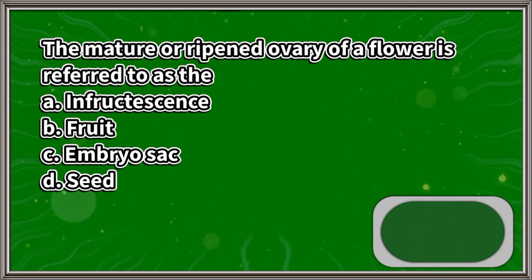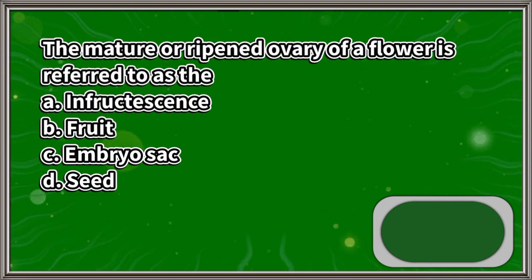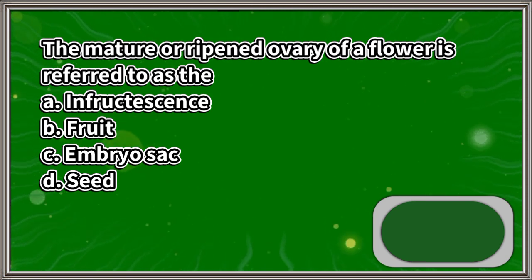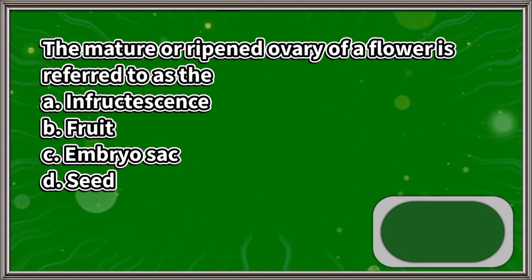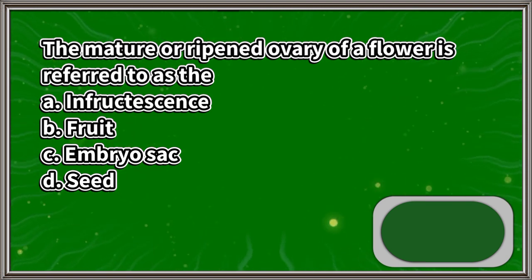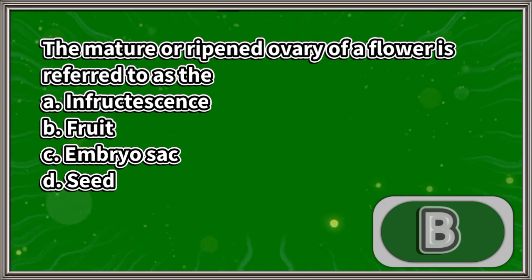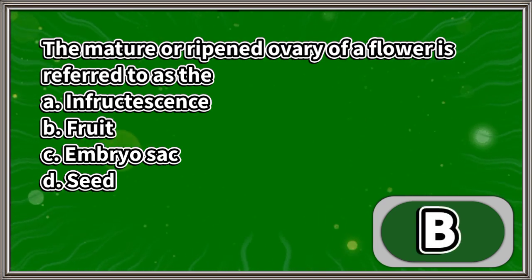The mature or ripened ovary of a flower is referred to as the: A. Infructescence, B. Fruit, C. Embryo sac, D. Seed. The answer is letter B.